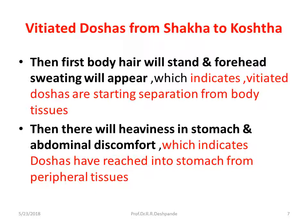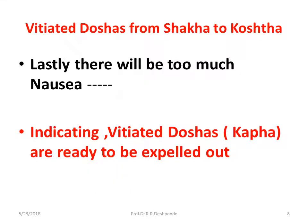After 15 to 30 minutes, the patient will say they are feeling heaviness in the stomach and some abdominal discomfort. This indicates that vitiated Kapha and Pitta have reached the stomach from the peripheral tissues and have gathered there. Lastly, there will be a strong feeling of nausea or vomiting, indicating that the vitiated Doshas — Kapha and Pitta — are ready to be expelled out from the body.